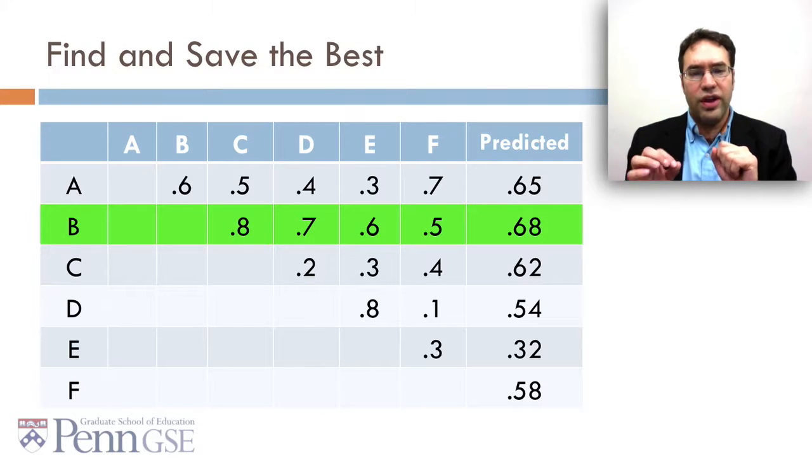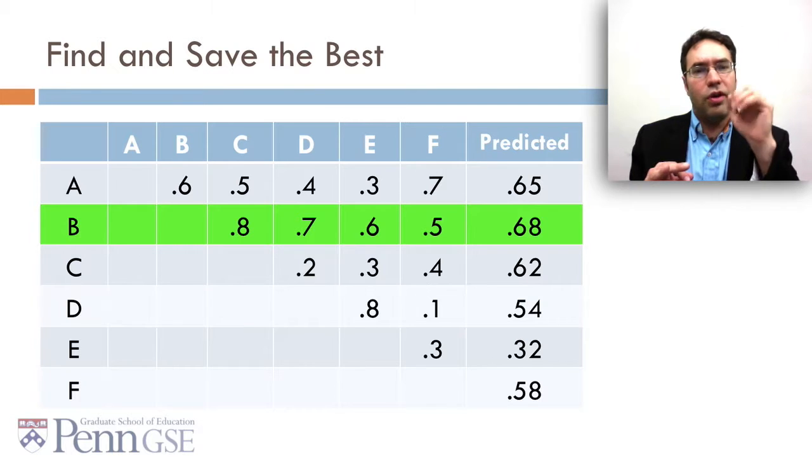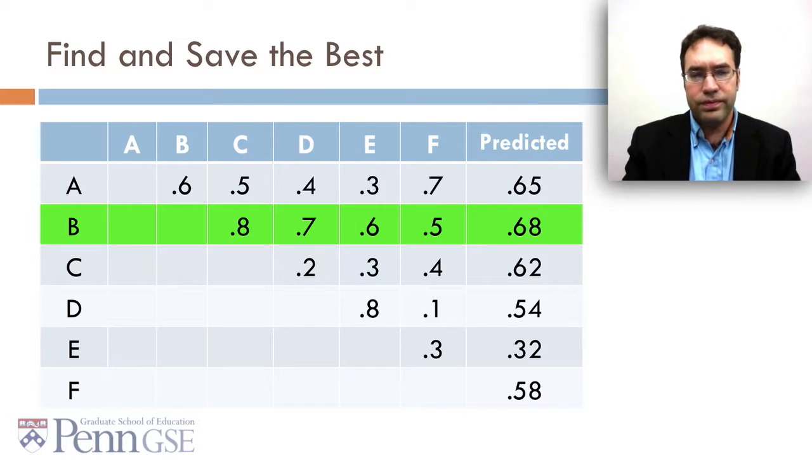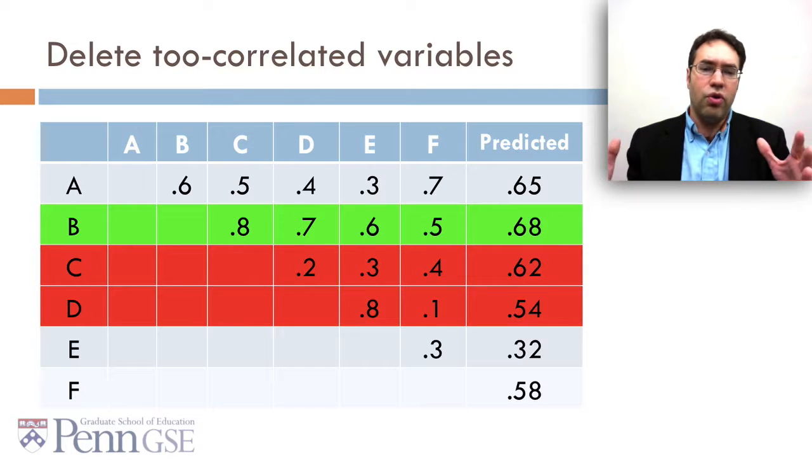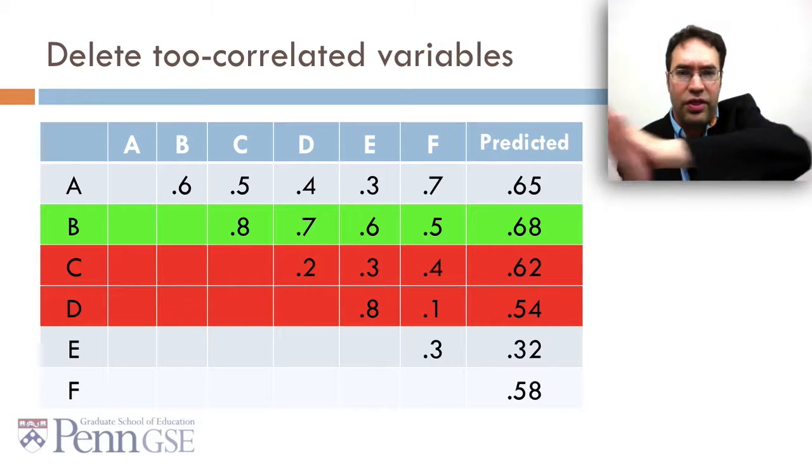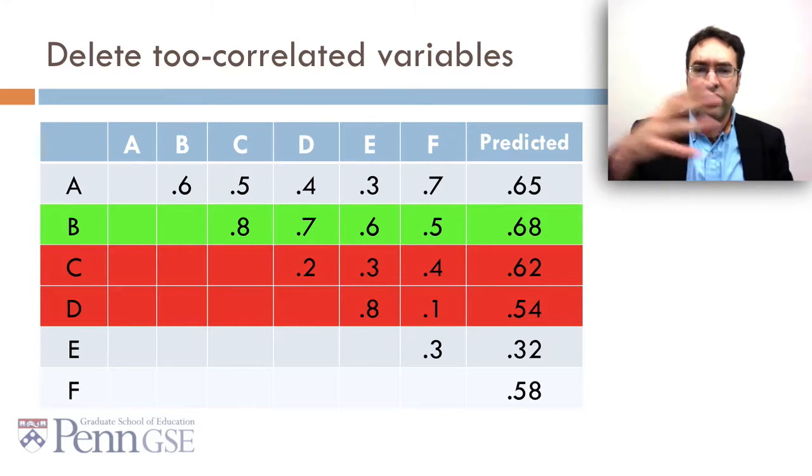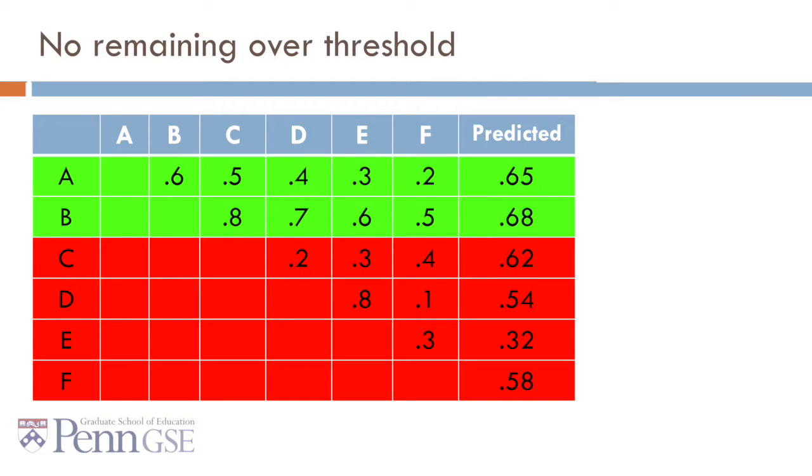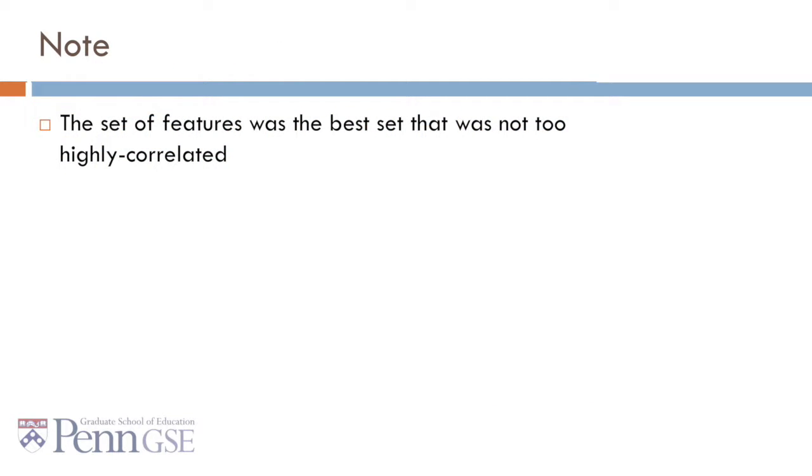First, we're going to find and save the best, that turns out to be B. B has a correlation to the predicted variable of 0.68, which is better than any of the other variables. Then we're going to take the variables that are too correlated, in this case C and D. C and B correlate at 0.8, and C and D correlate at 0.7. None of the other ones are above 0.65, so we're going to take C and D and they're gone. We're done with them, we're never going to look at them again. We've saved B, we've thrown out C and D. Now at this point we don't have any variables remaining over the threshold. Variable E was not over-correlated to anything, but it's below our initial threshold, so we exclude it.